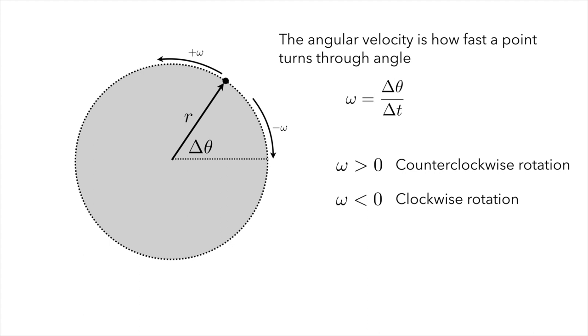The convention that we use is that an angular velocity greater than zero corresponds to counterclockwise rotation. This is the mathematics definition where angle is increasing in the counterclockwise direction. The angular velocity being less than zero corresponds to clockwise rotation.